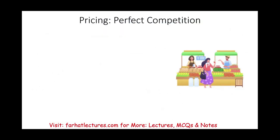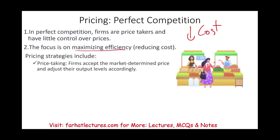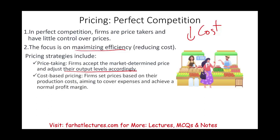What are the pricing strategies in a perfect competition? Firms are price takers, so the focus is on maximizing efficiency. How do you make money? You want to reduce your cost, operating at maximum efficiency. You're going to accept the market price and adjust your output level accordingly — you might have to cut or increase depending on market forces. Sometimes in a perfect competition, firms operate on cost-based pricing, meaning they try to sell their product at a minimum just to cover their costs, set prices based on production costs, aiming to cover expenses and achieve a small or normal profit margin.